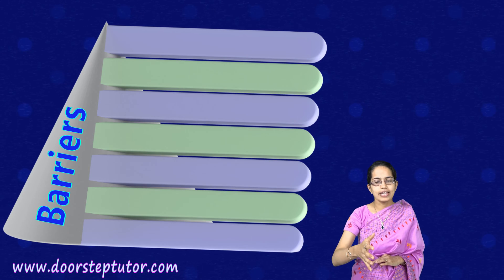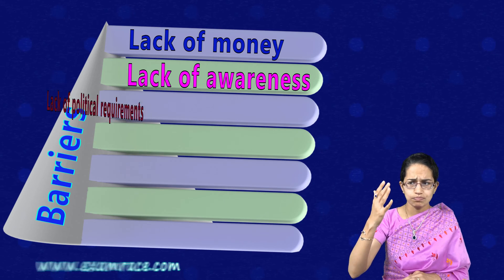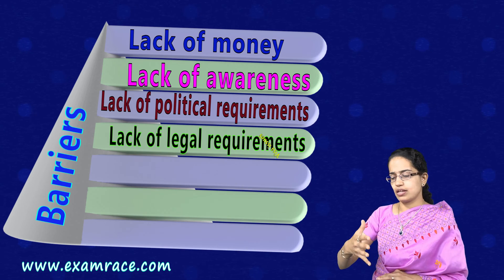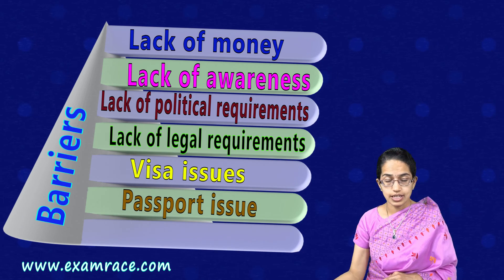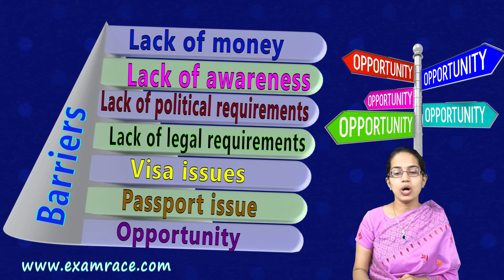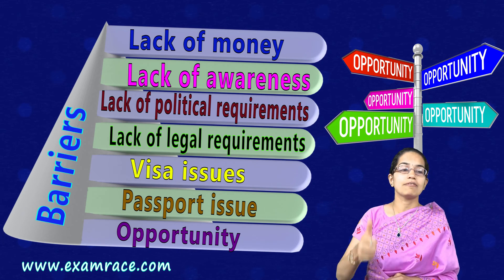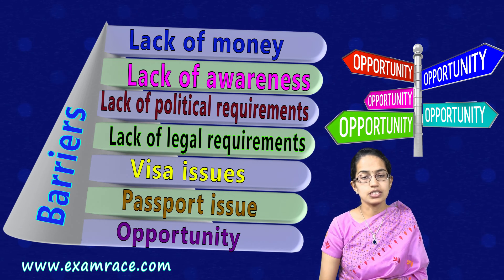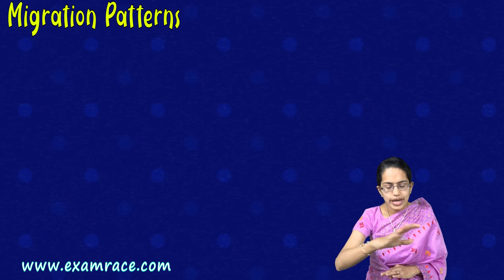Whenever movement takes place there are barriers. These barriers could be lack of money, lack of awareness, lack of legal requirements — visa issues, passport issues across international boundaries — and lack of opportunity. When there is a lack of opportunity, it is a definite barrier from the country of origin to the country or region of destination.